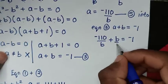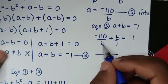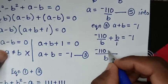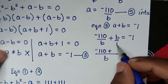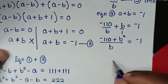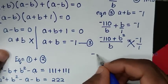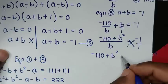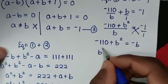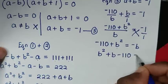Multiplying through by b to clear the denominator, we get negative 110 plus b² equals negative b. Rearranging, b² plus b minus 110 equals 0. This is a quadratic equation in b.